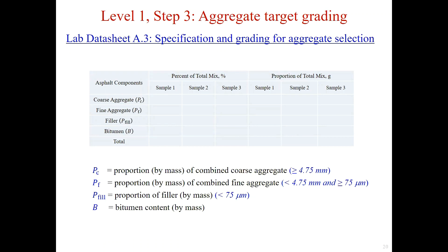We could also work out the proportion of combined coarse aggregate PC, the proportion of combined fine aggregate PF, proportion of filler PFU, and bitumen content B. PC is for coarse aggregate with particle size equal to or greater than 4.75 mm. PF is for fine aggregate with size less than 4.75 mm but equal to or greater than 75 micrometers. PFU is for filler with size less than 75 micrometers. For example, for sample one, the bitumen could be calculated as the total mass 1,200 grams times 4%, giving a value of 48 grams.